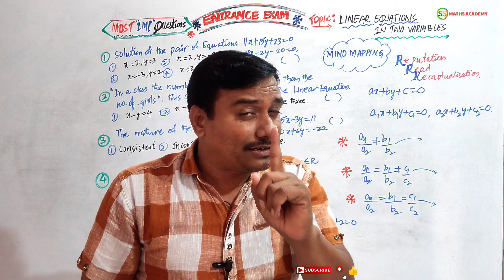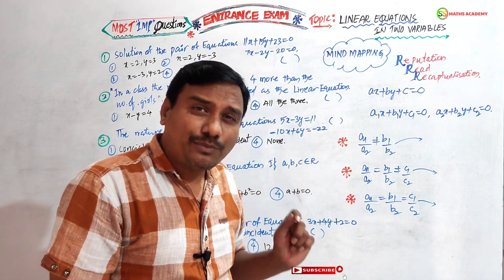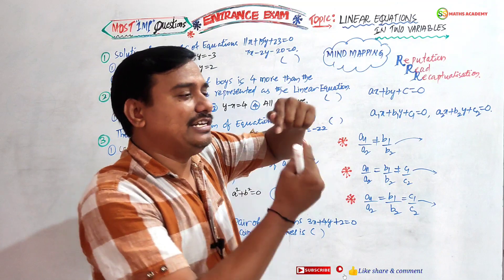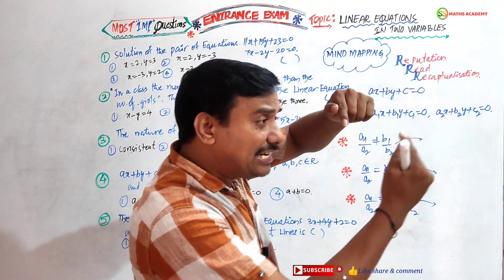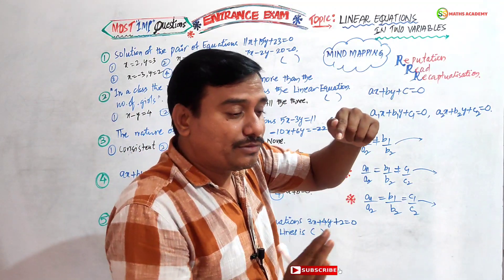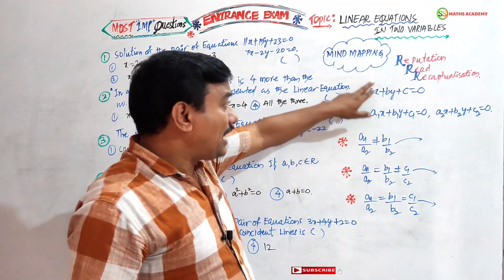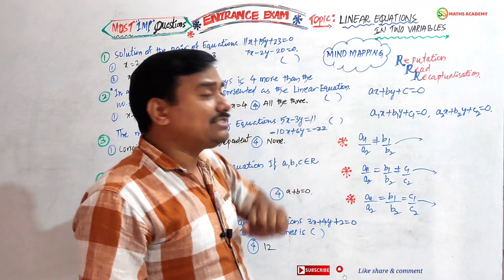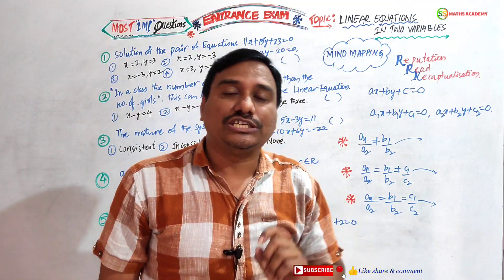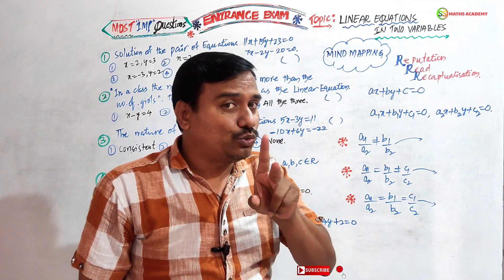The degree is one. But our present topic is linear equation in two variables. That is the reason I am going from the basics. Now, ax + by + c = 0 is called a linear equation in two variables.